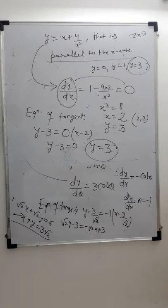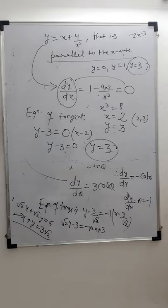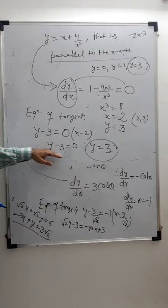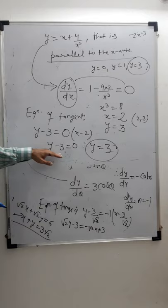Now, equation of tangent: y − y₁ = m(x − x₁), with y₁ = 3, m = 0, x₁ = 2. So y − 3 = 0, therefore y = 3 is the equation of the tangent. Since the tangent is parallel to the x-axis, slope m = 0, and from dy/dx = 0 we found the point (2, 3). The equation of tangent is y = 3. Now we will move to some more problems.